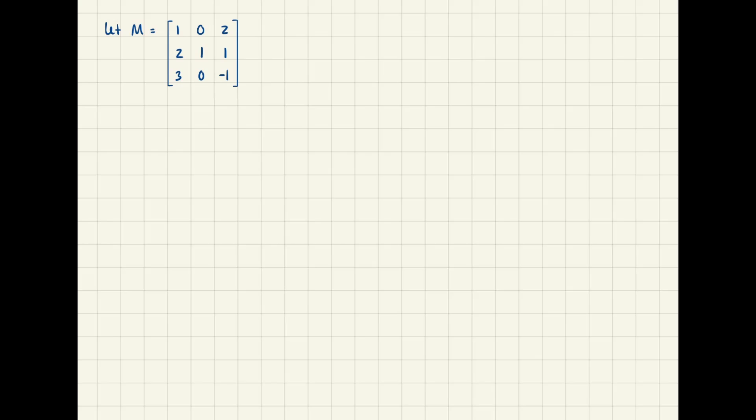Alright, let's get started. Say that M is a 3x3 matrix with the following values. The first thing we want to do is write what's called a characteristic equation in this form, where M is our matrix, I is the identity matrix of M, lambda is the unknown eigenvalue, and DET is just the determinant of the whole thing.